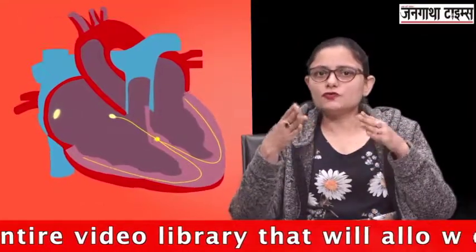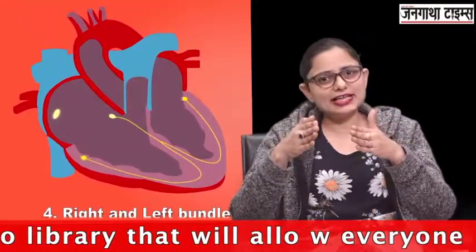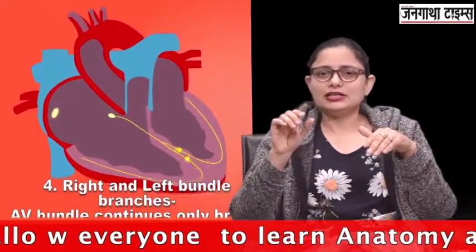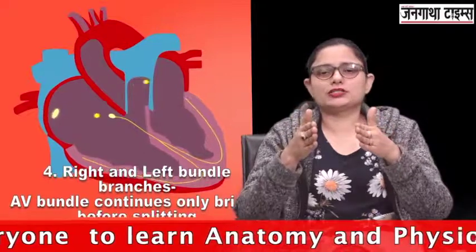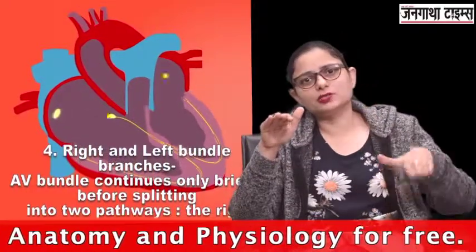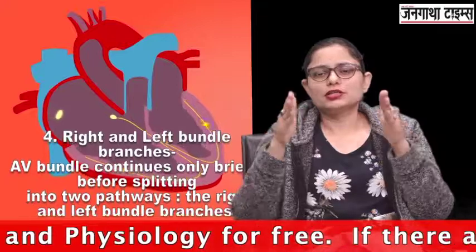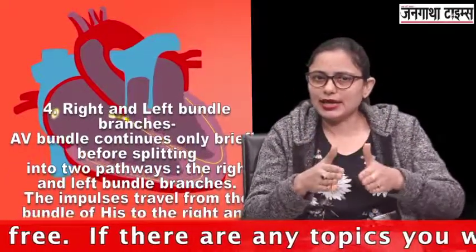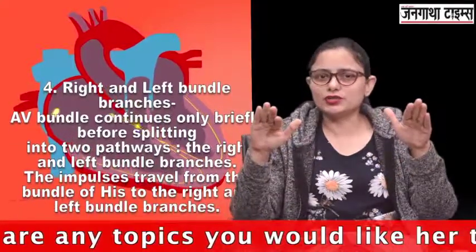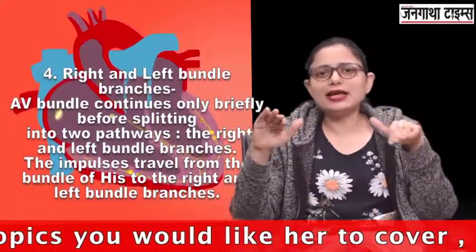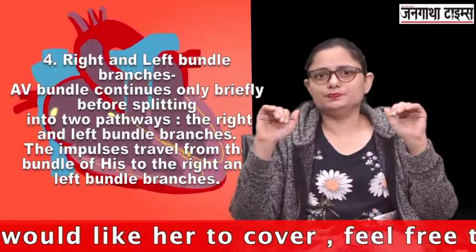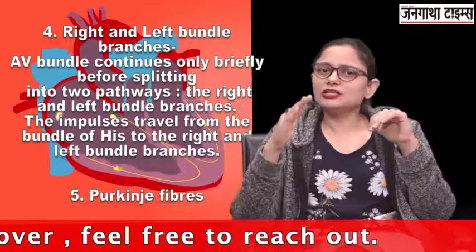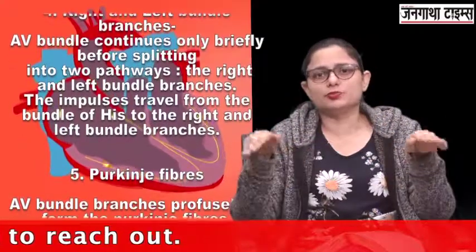The fourth component is the right and left bundle branches. The Bundle of His divides into two pathways: the right bundle branch and the left bundle branch. They run through the interventricular septum and then into the walls of both ventricles — the right ventricle and the left ventricle. The impulse travels from the Bundle of His to these two bundle branches.